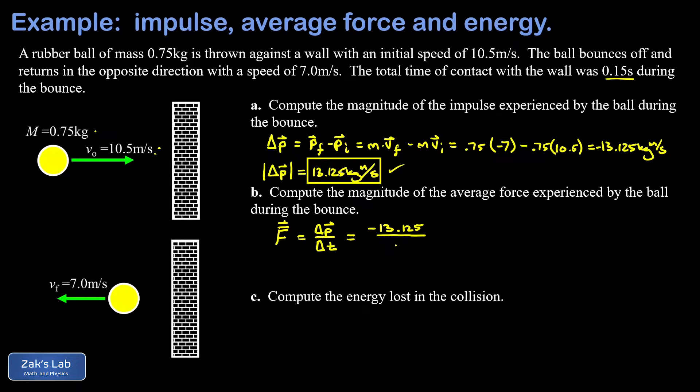When we run the numbers we get negative 87.5 newtons indicating that the force experienced by the ball pointed to the left, which makes a lot of sense. It ran into a wall that was to the right of it, of course the wall was pushing back to the left.